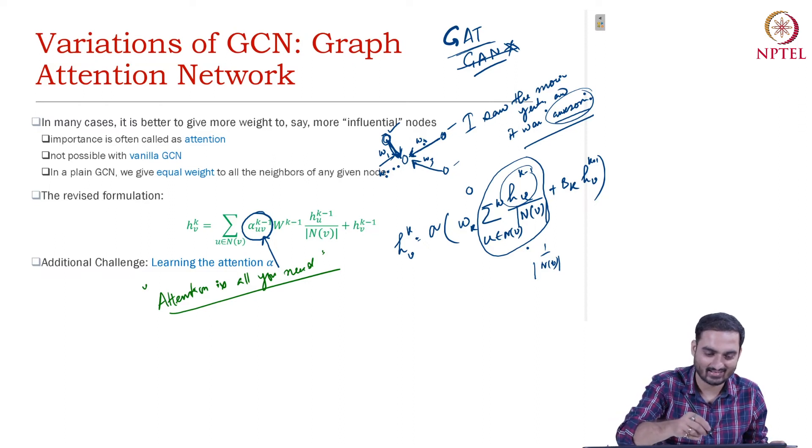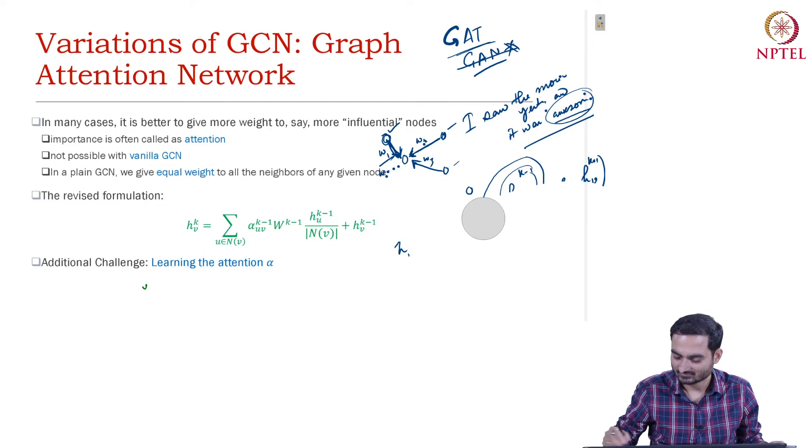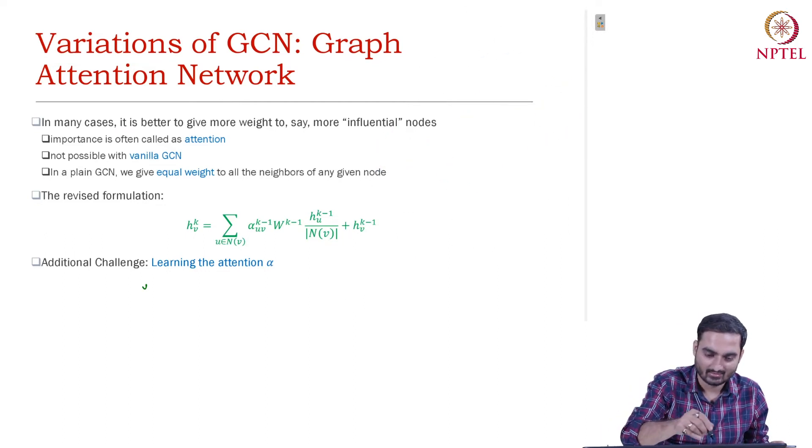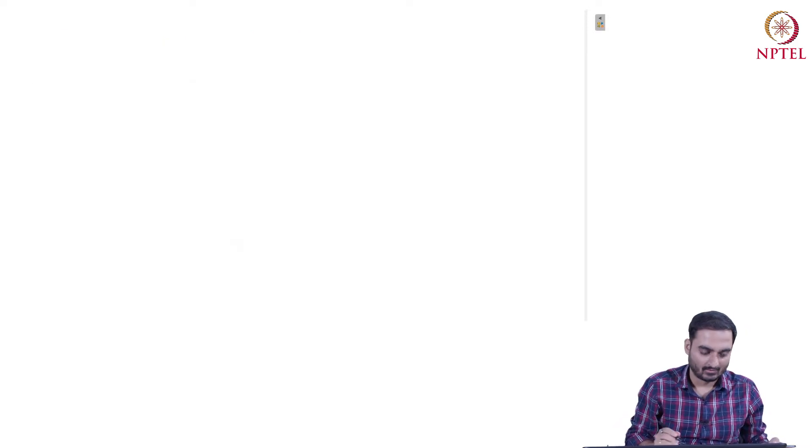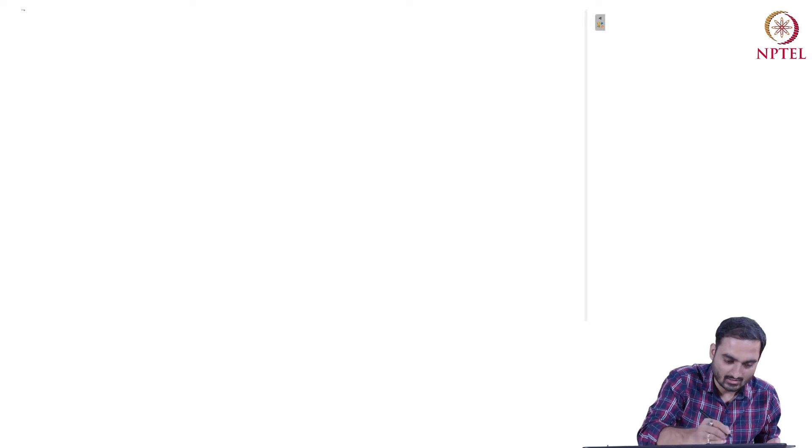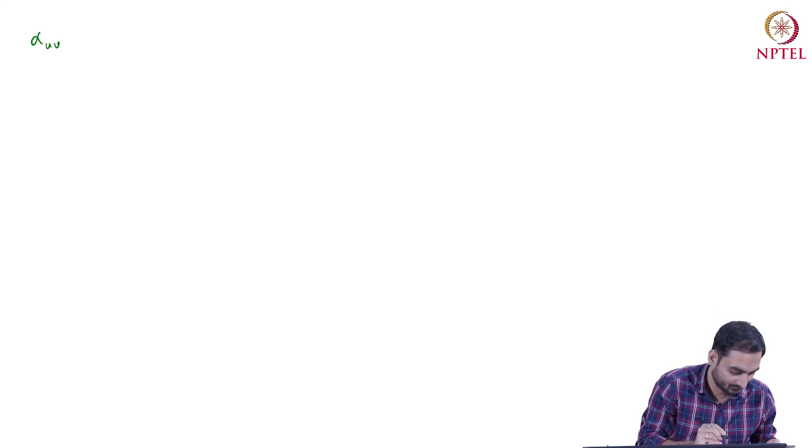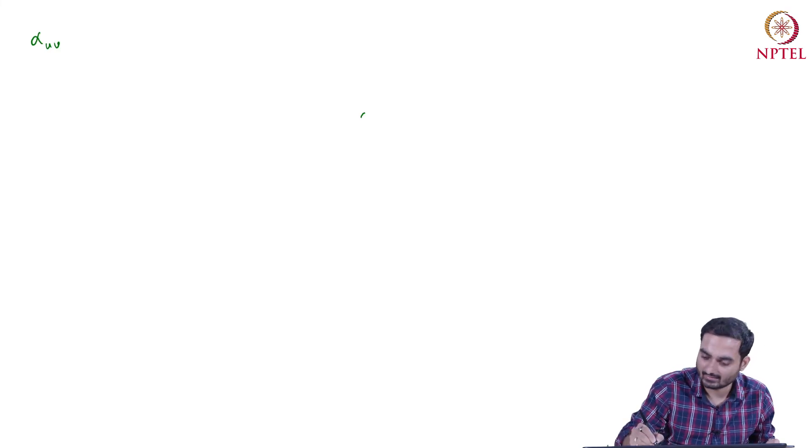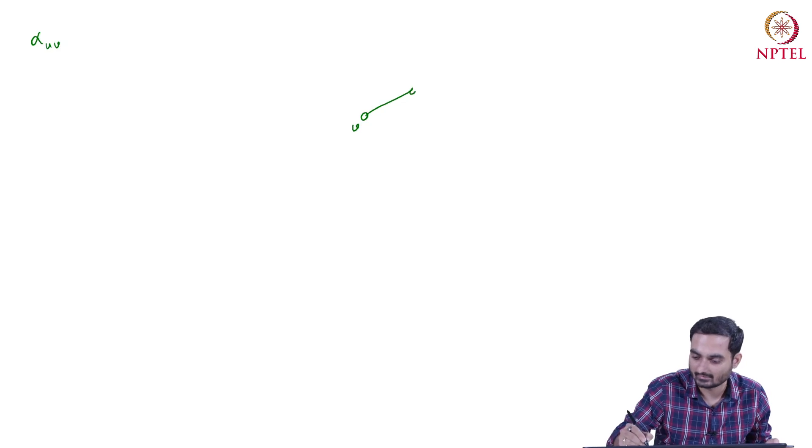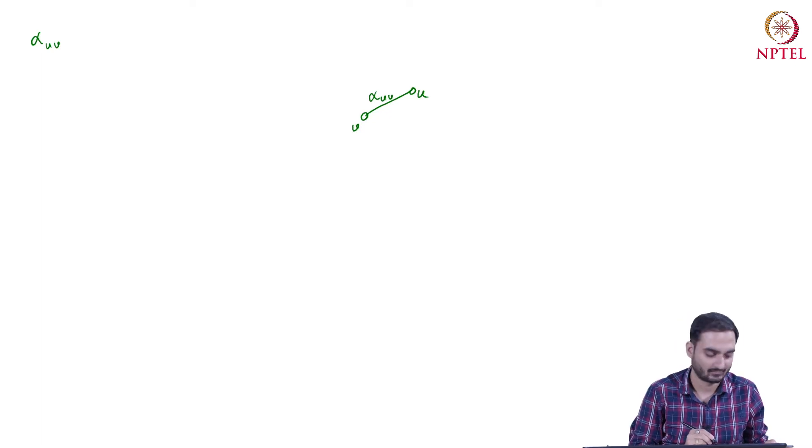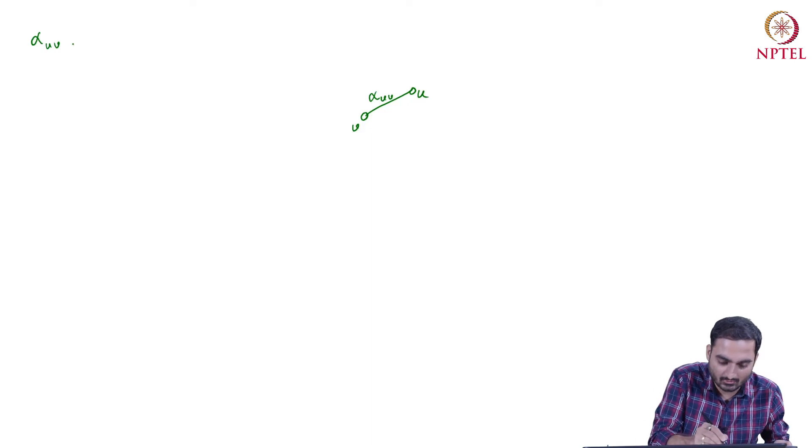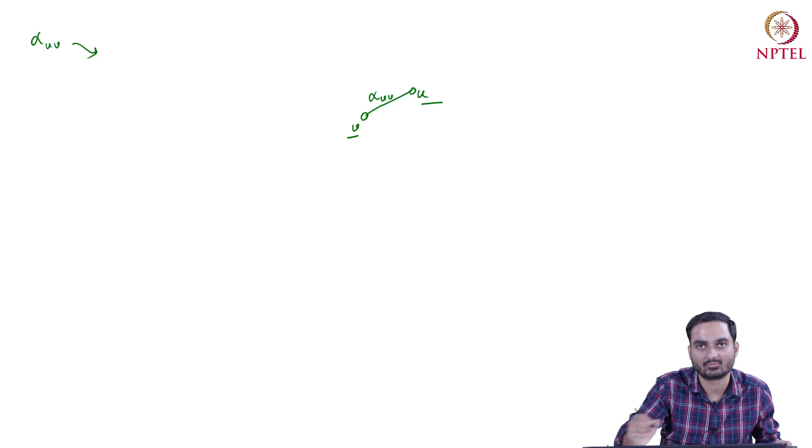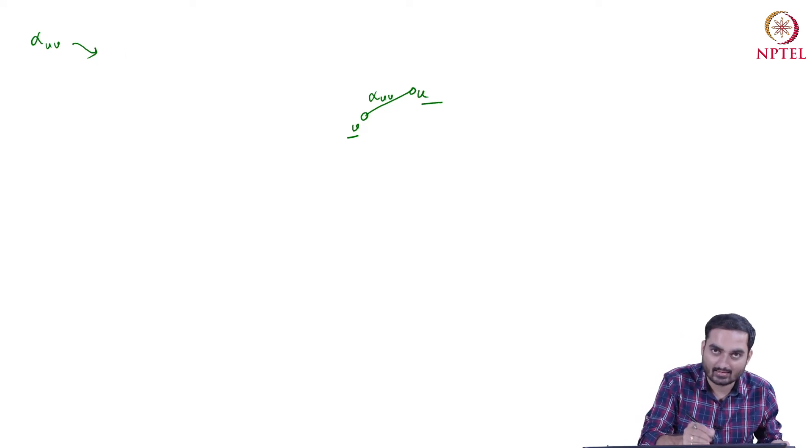So let us look at Graph Attention Network. What is the idea here? The idea here is that we essentially learn the attention weight, alpha_uv. Alpha_uv - let's say this is v, the node for which you want to get the embedding, and this is one of its neighbors u. And this edge weight is alpha_uv that you want to learn. This is attention. So this we will learn through the embeddings of v and embeddings of u.